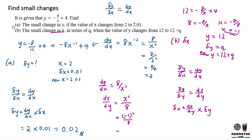So x is equal to negative 1. Substituting negative 1 into x squared over 8 gives 1 over 8 as your dx/dy. Since dx/dy is 1 over 8 and delta y is q, your delta x will be q over 8. This is your final answer.